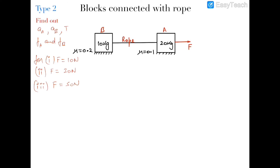This is Type 2 problems, which we call block connected with rope problems. The basic problem in front of you is a system of two blocks A and B connected to each other by a rope, with a pulling force F applied on block A. The friction coefficients are given for both blocks, and we have to find the accelerations of blocks A and B, the tension in the rope, and the actual friction force acting from the ground on each block.